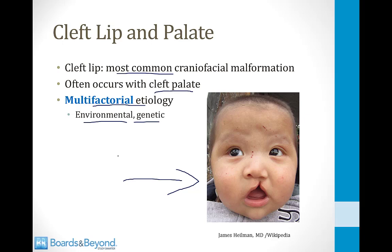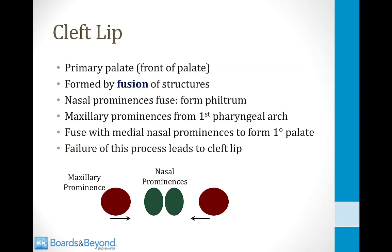These usually don't run in families in an autosomal dominant or autosomal recessive fashion. Cleft lip is a problem of the primary palate. This is the front of the palate, and therefore it involves the front of the roof of the mouth and the upper lip. This portion of the palate is formed by fusion of a number of structures.